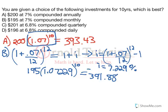So, so far, the 7% annual is winning. Mostly because even though the rate was smaller, we started with $5 more, $200 instead of 195. Let's go to C.